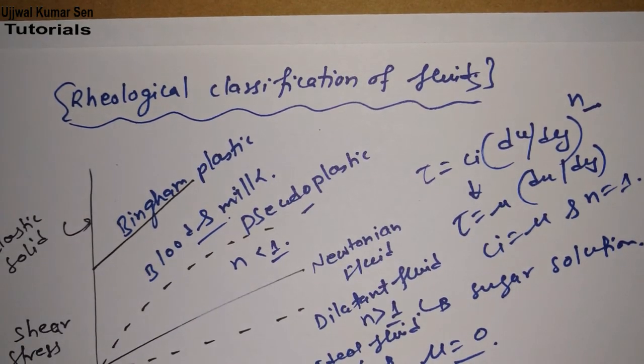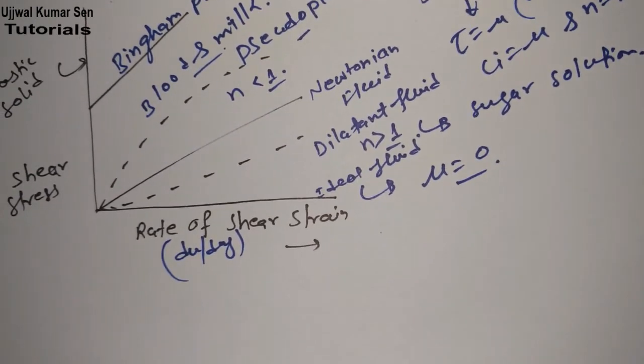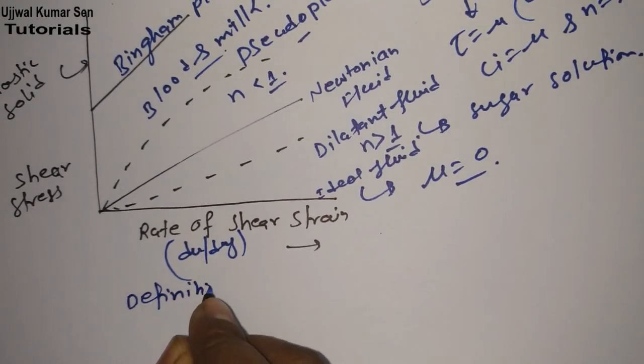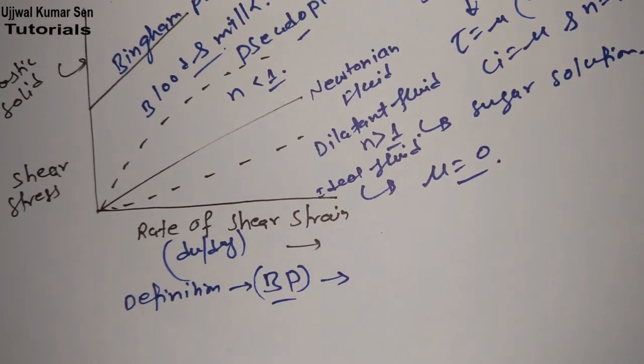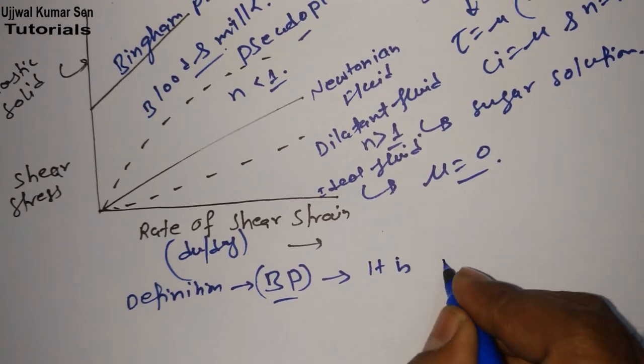Now you got the point: Newtonian, dilatant, ideal fluid, pseudo-plastic fluid. Now let's go for Bingham plastic fluid. This is really important. So before sharing about it, I will share with you the definition of Bingham plastic (BP).